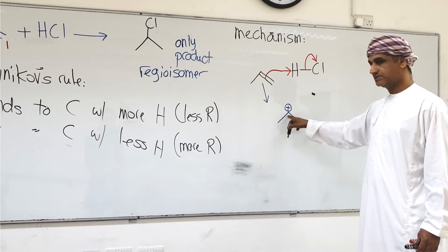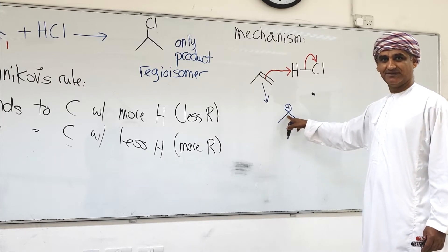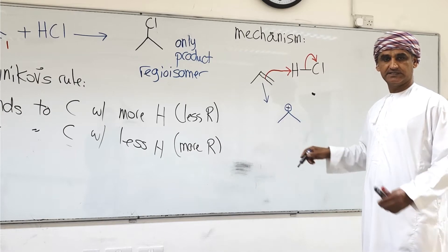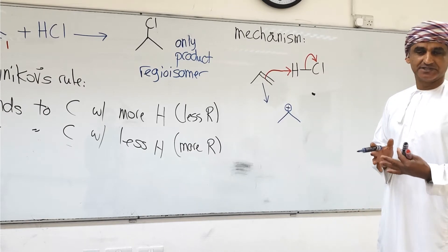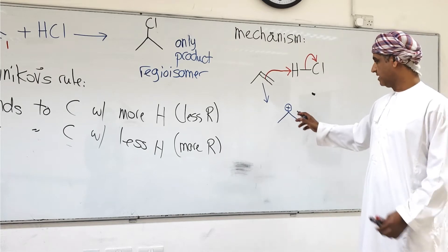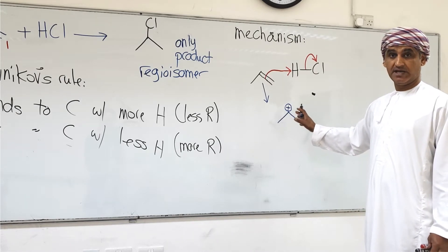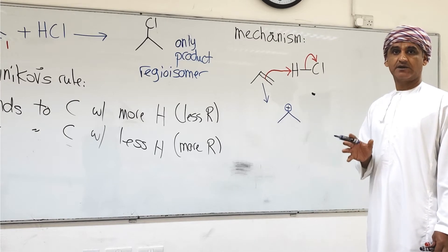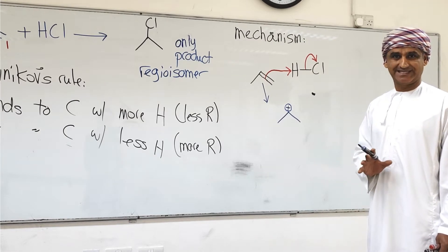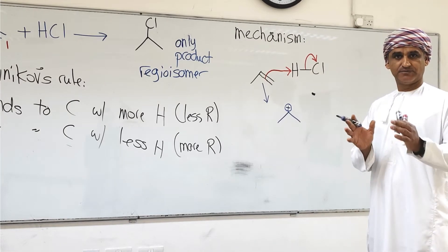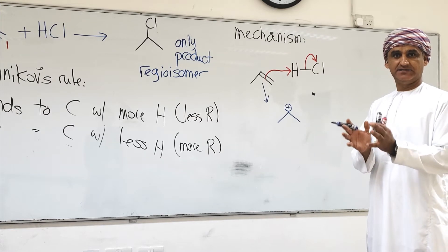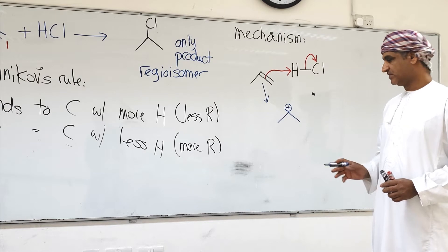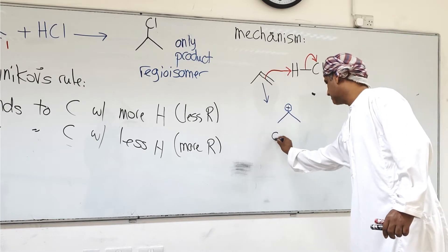That carbon would have only six electrons around it instead of eight, and that's why this carbon must carry a positive charge. This positively charged carbon in the intermediate is a carbocation — carbo from carbon, cation indicating the intermediate is positively charged. This is a carbocation intermediate.